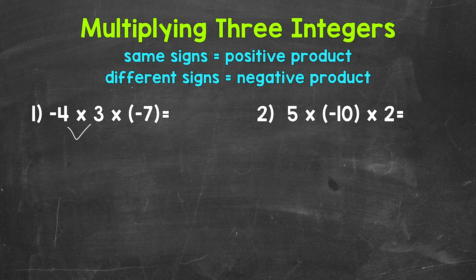So we have a negative times a positive — different signs — so we will have a negative here. Let's think of this as four times three, which is 12, and again, it's going to be negative. Bring down our multiplication sign and the negative seven.